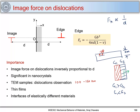Another important condition is: if the image force is greater than the Peierls-Nabarro stress τ_PN, the dislocations near the surface will spontaneously experience a net force, move to the surface, and get removed. This is an important situation in which dislocations can be removed from the surface.